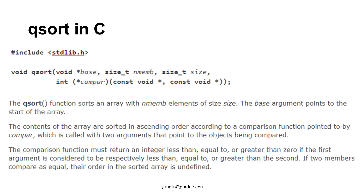After understanding function pointers, we can talk about the qsort function. This function takes four arguments. The first is an address, the second and third are integers, and the fourth is a function. The qsort function sorts an array with nmemb elements of a given size. The base argument points to the start of the array. The contents are sorted in ascending order according to a comparison function pointed to by compar, which is called with two arguments that point to the objects being compared.